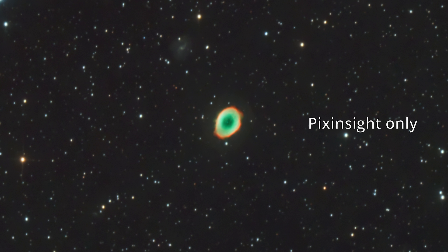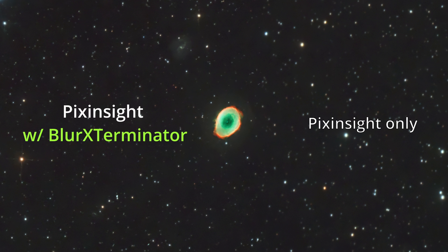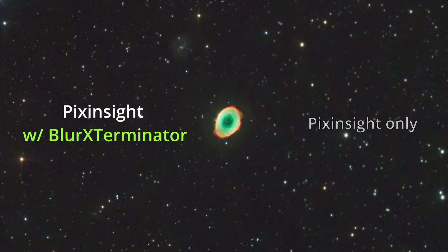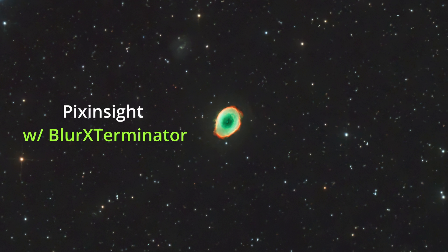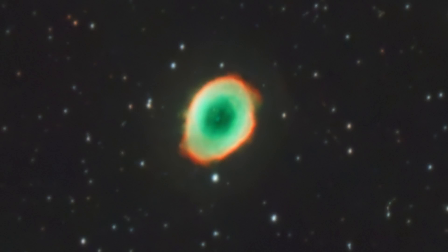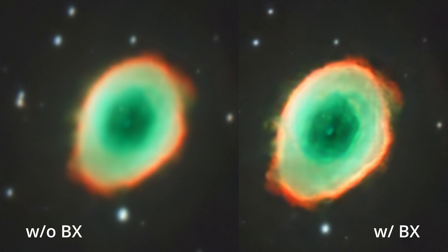A couple of months later, I touched the data again and used Blur Exterminator, and here's the result. Blur Exterminator will not just decrease the size of your stars, but will also sharpen your image, as you can see here. I think that's really impressive, what AI can do in terms of image processing. Are you using Blur Exterminator as well? I highly recommend it.